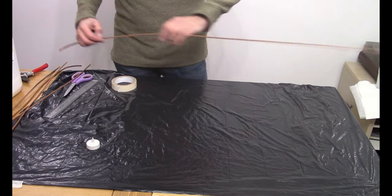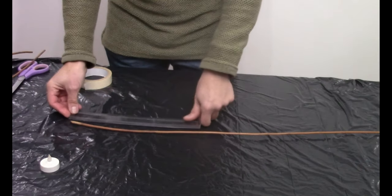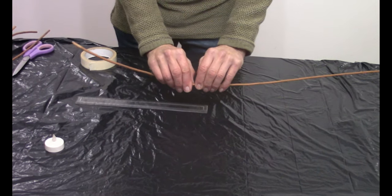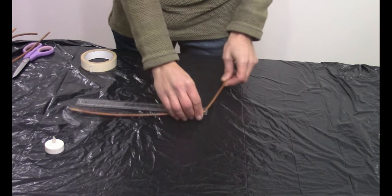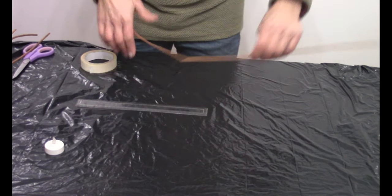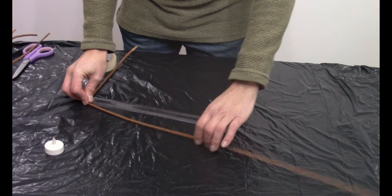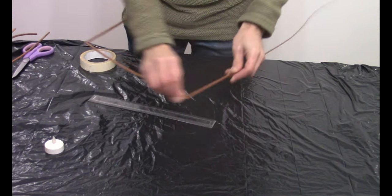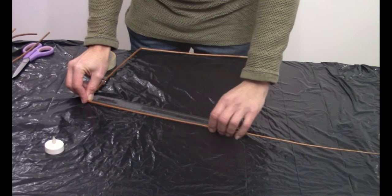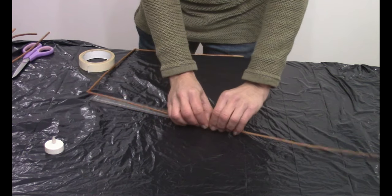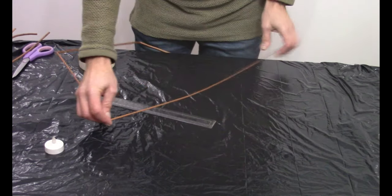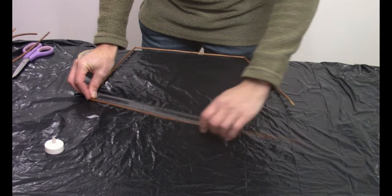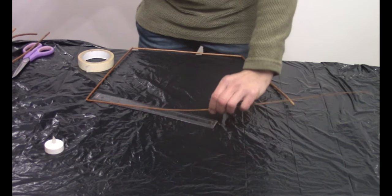Firstly, take one piece of willow, and we're going to bend it at 30cm intervals. Bend until a 90 degree angle, and bend, and bend. The final one, we're going to measure again to 30cm, and we're going to cut it.